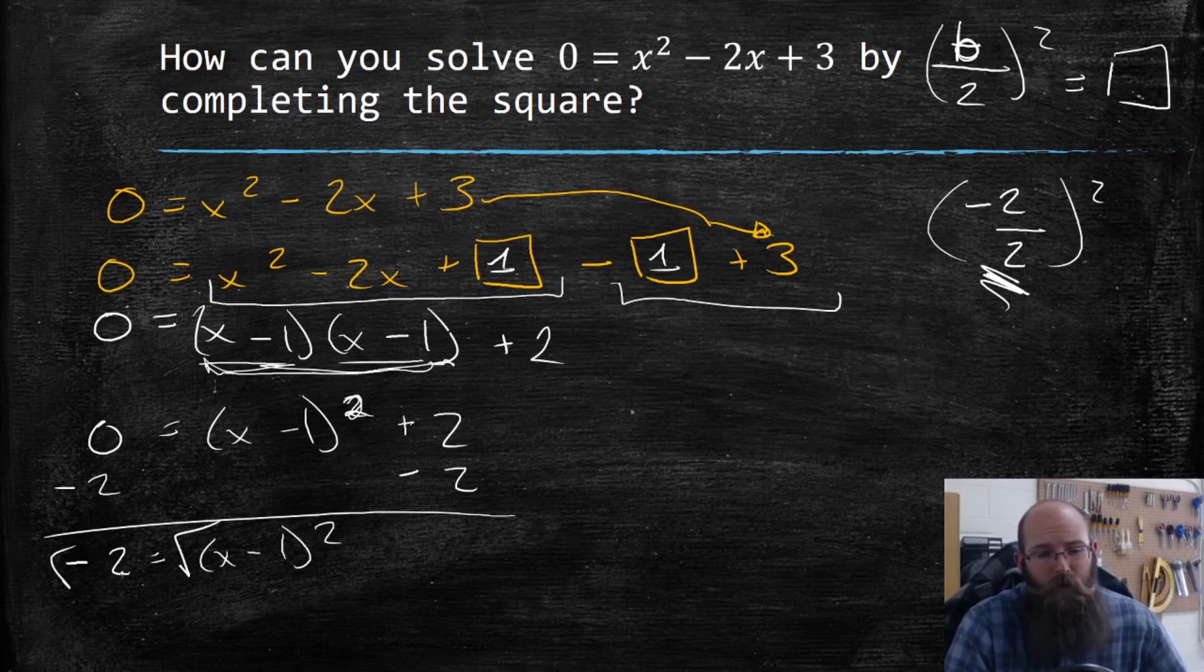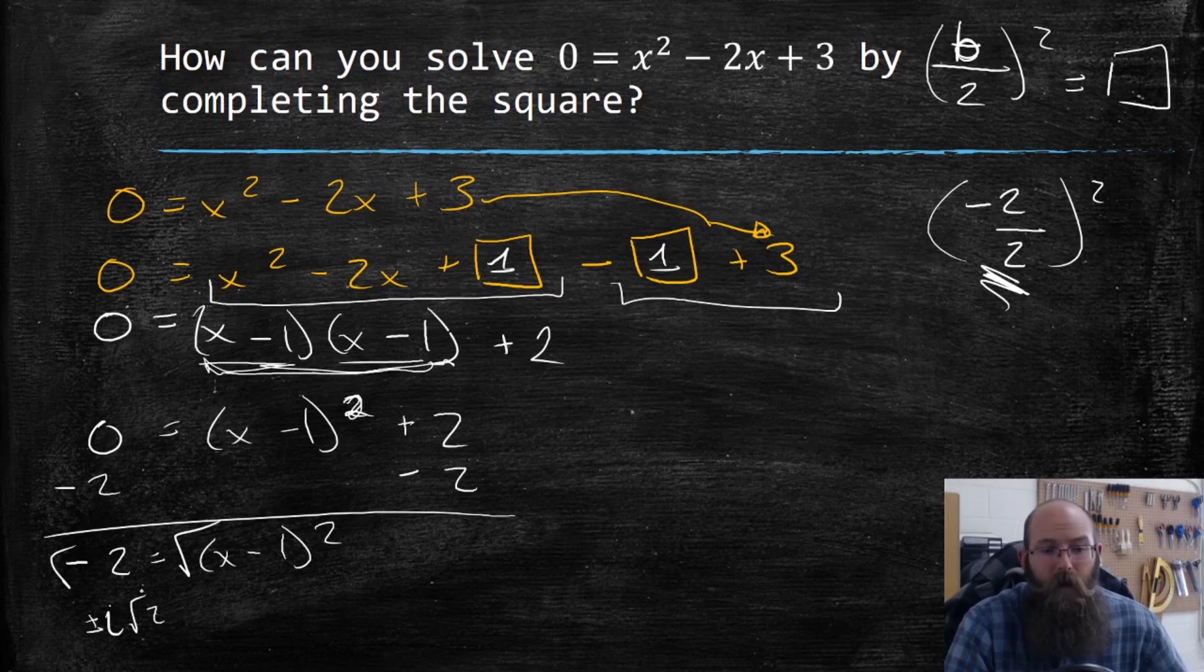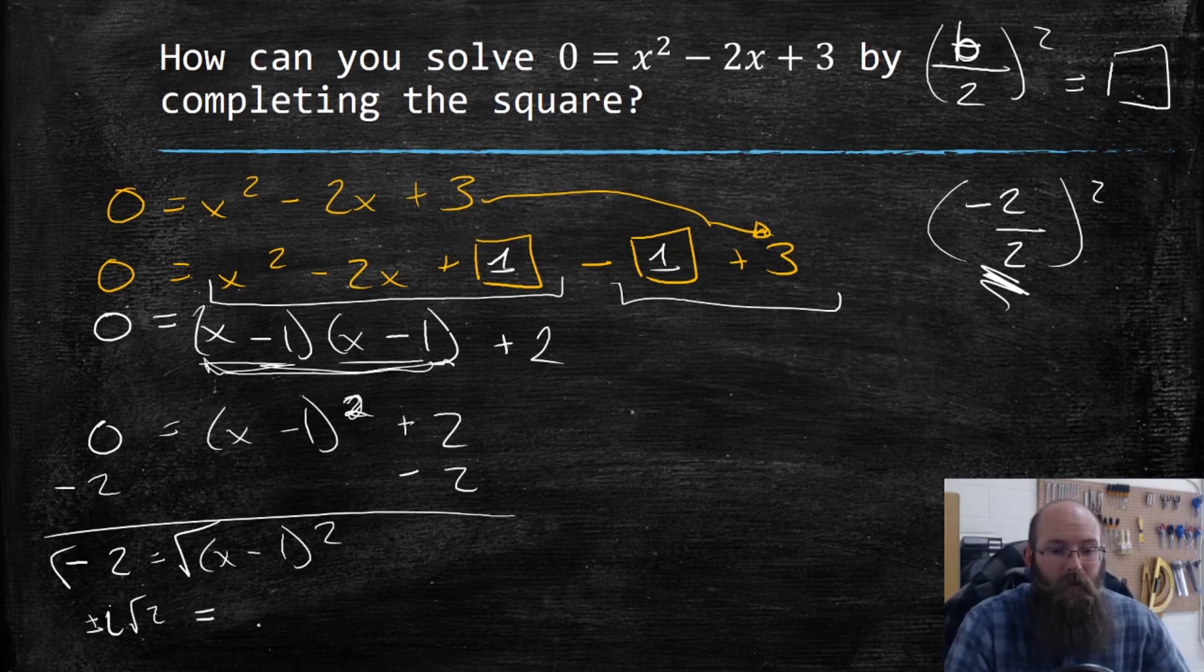But we know on the right, this is going to be i times square root of two, plus or minus, because I'm taking a square root of a negative number. That's my last video. Go check that out if you need more help with complex numbers. And then this is going to equal x minus one. So now I actually have to add that one over, so that everything is all on the left side and my x is by itself. So plus one plus one. I rewrite this because I'm just out of space here.